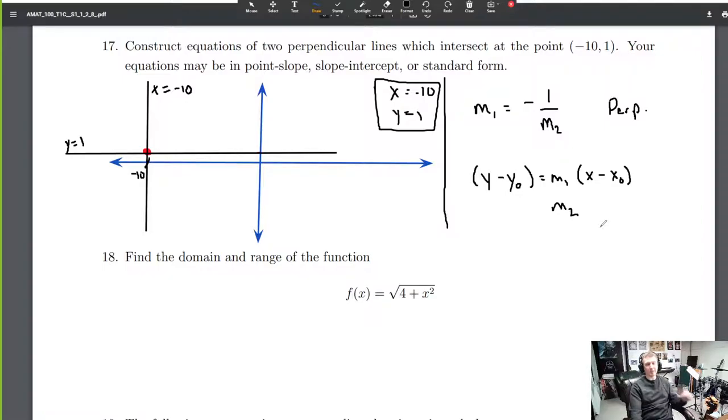There's a couple variations on this problem, of course, where you're not given the intersection point. You're just given some random point and the equation is some other line. Well, first, find the perpendicular slope, then use point slope form to give the equation of the line, which is perpendicular.